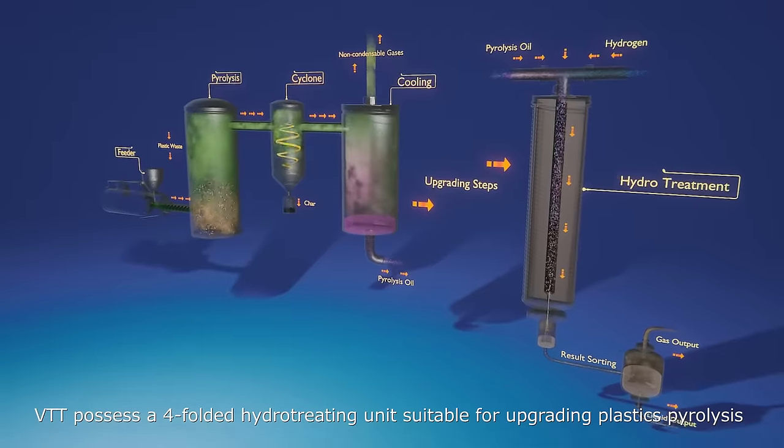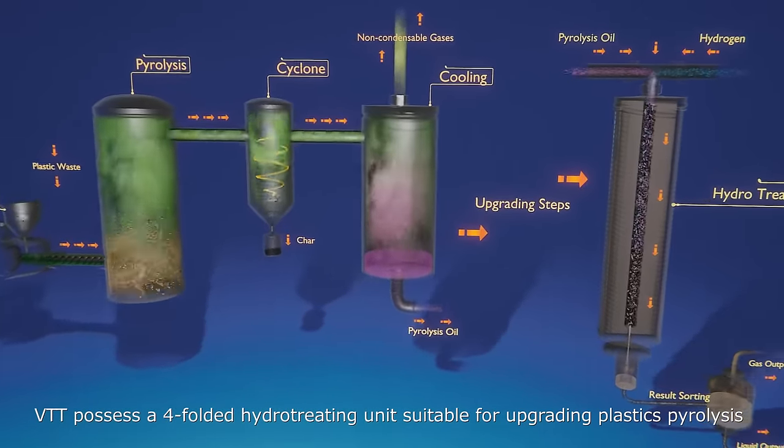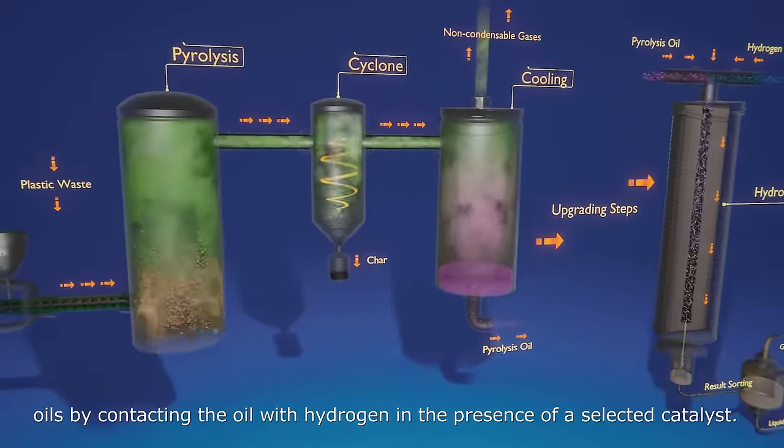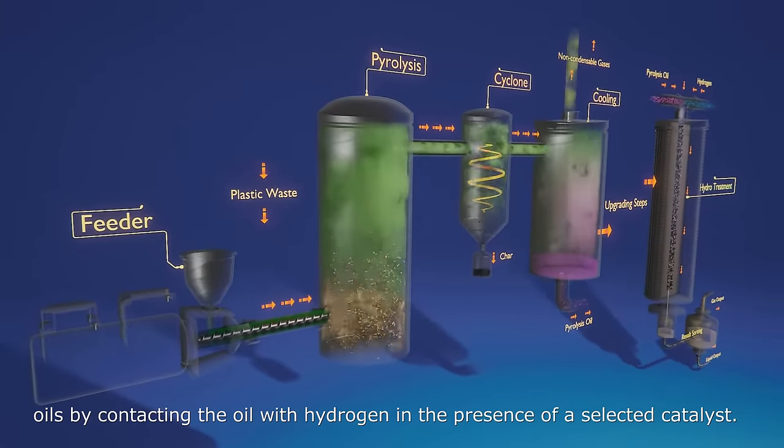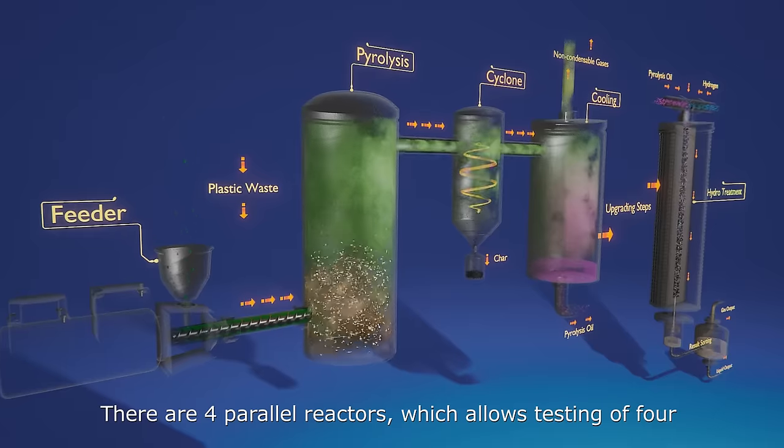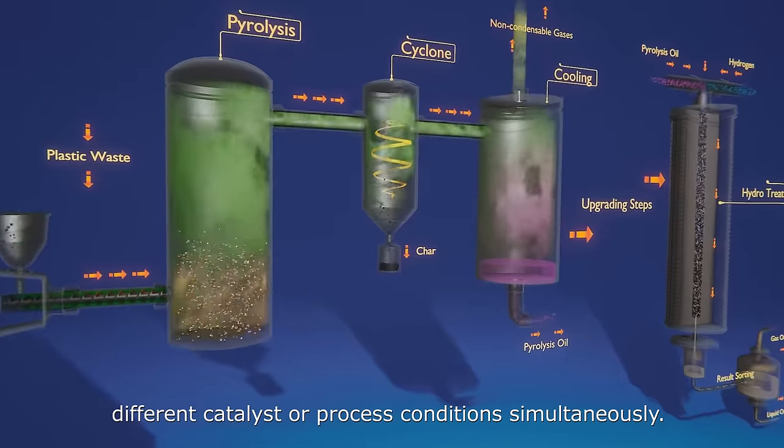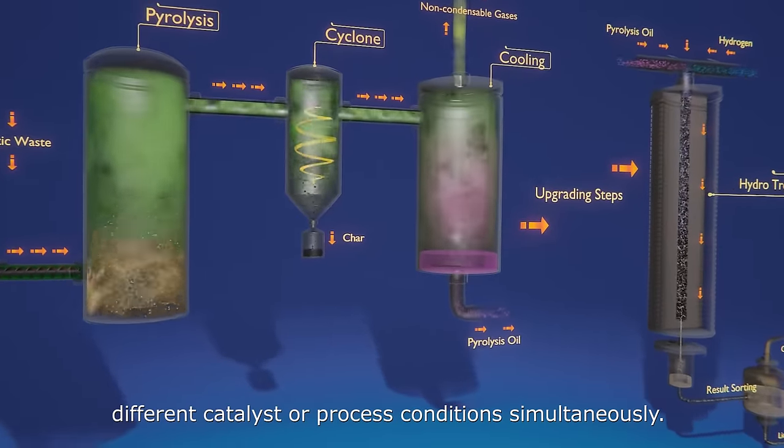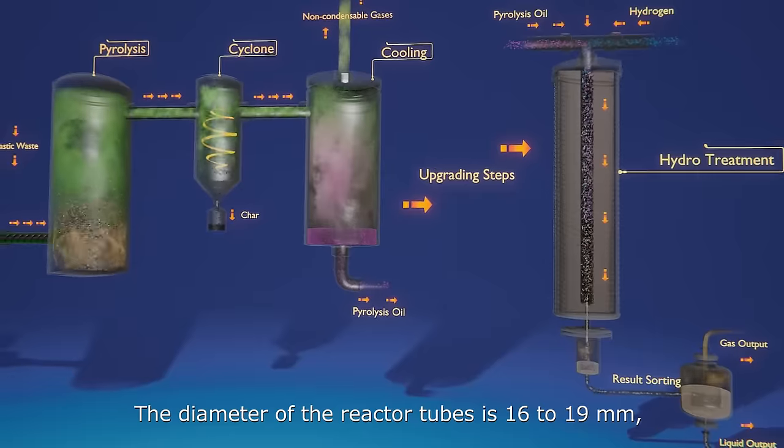VTT possesses a four-fold hydrotreating unit suitable for upgrading plastics pyrolysis oils by contacting the oil with hydrogen in the presence of a selected catalyst. There are four parallel reactors which allow testing of four different catalyst or process conditions simultaneously. The diameter of the reactor tubes is 16 to 19 mm, which makes the testing of industrial-sized catalyst extrudates possible.